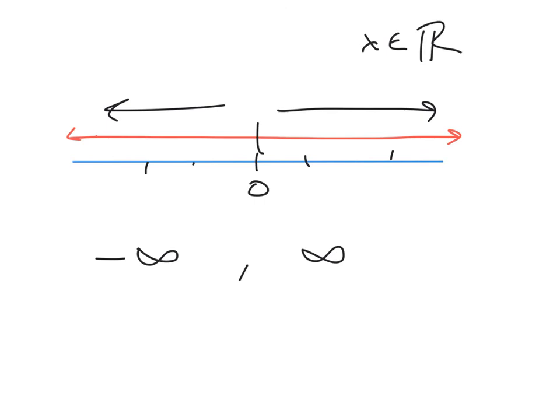And we are going to use parentheses to do these. We're using parentheses because negative infinity is never actually going to be reached. And the same thing with positive infinity. So that value is not going to be included in your domain or range.